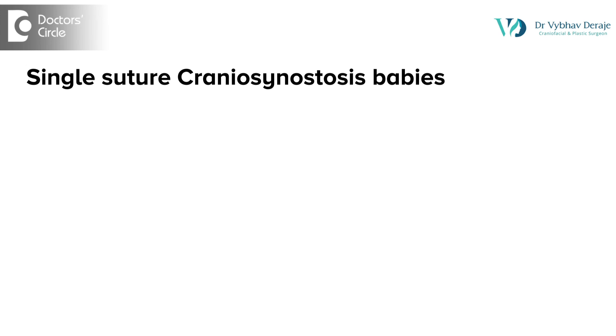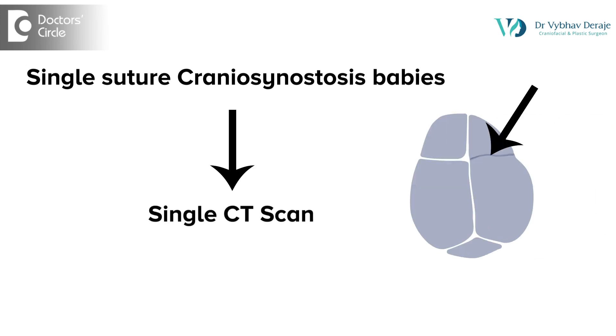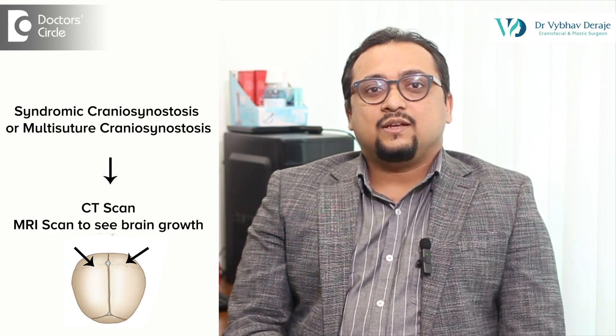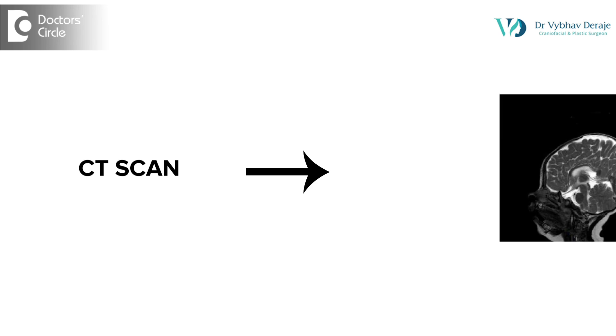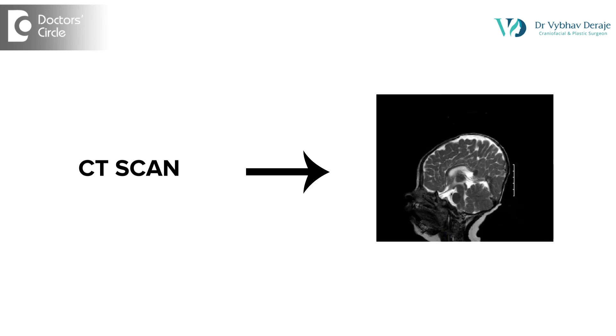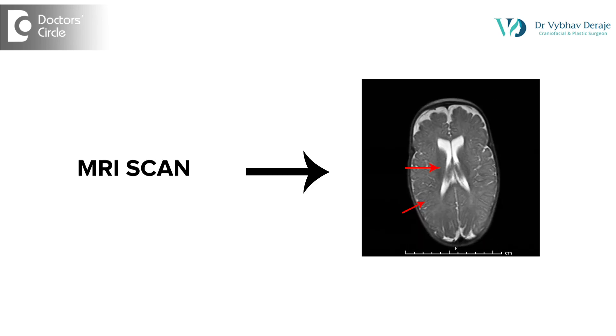Most single suture craniosynostosis babies will only require one CT scan to diagnose craniosynostosis conclusively. But sometimes in syndromic craniosynostosis or in multi-suture craniosynostosis we might also need an MRI scan to see how the brain is doing. The CT scan is very good for us to know about the bone, but MRI can give us good knowledge about the soft tissue, that is the brain inside the skull.